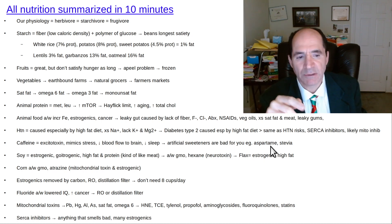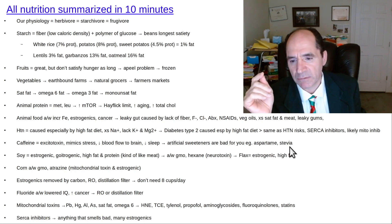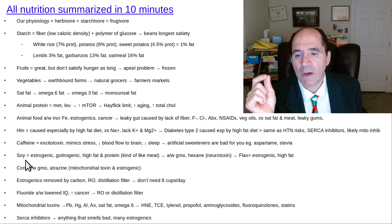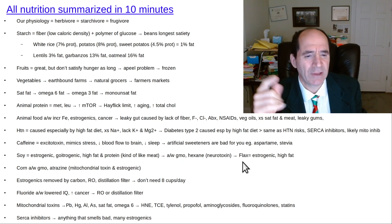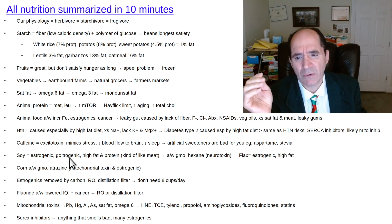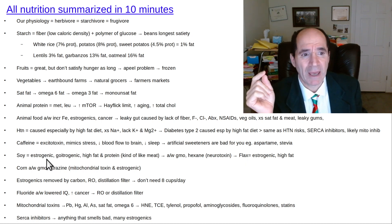Artificial sweeteners are all bad. Aspartame is an excitotoxin. Stevia makes people infertile. Soy is estrogenic, goitrogenic, high in fat and protein. That's why it's kind of like meat in a lot of ways. It raises insulin-like growth factor. I don't like it, I think it's a toxin. It's associated with GMO. Hexane is a neurotoxin. Flax is super estrogenic, more than soy. I think these are a bad idea.